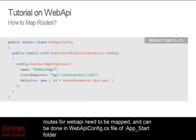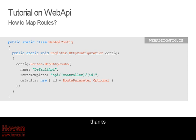Routes for Web API need to be mapped, and can be done in the WebApiConfig.cs file of the App_Start folder. Thanks.